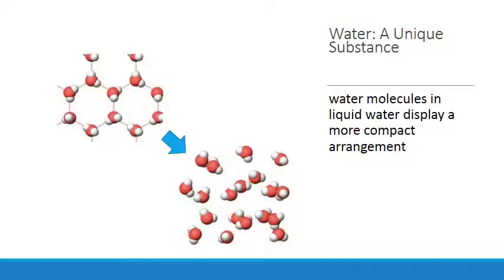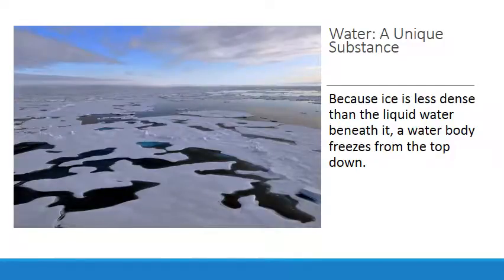When ice forms on a water body, it insulates the underlying liquid and slows the rate of freezing at depth. If a water body froze from the bottom, imagine the consequences. Many lakes would freeze solid during the winter, killing the aquatic life.